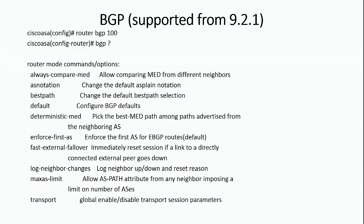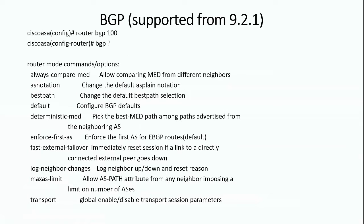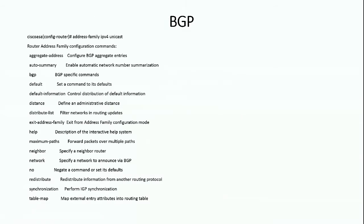The different options include best-path and log-neighbor-changes. The default value configured even if we do not set it is log-neighbor-changes. So if you just do 'router BGP 100' and configure nothing, log-neighbor-changes will always be configured. Under router BGP 100, there is an option for address-family IPv4 unicast. All neighborship information would be defined under address-family IPv4 unicast for IPv4, or address-family IPv6 unicast for IPv6.